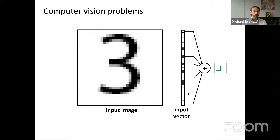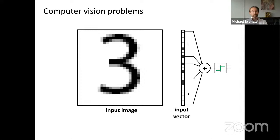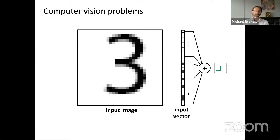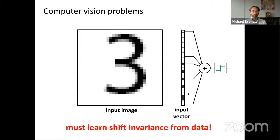A very concrete example comes from computer vision. To classify digits like the MNIST dataset, you can parse an image into a vector and feed it into a multilayer neural network. What it doesn't account for is the structure of the data. If I shift by just one pixel this digit, the input will be completely different, even though we want to say it's exactly the same digit. We'd need to give the neural network many such examples and learn translation invariance from the data — an extremely complicated function that would be nearly impossible to learn.